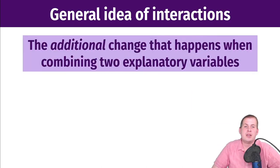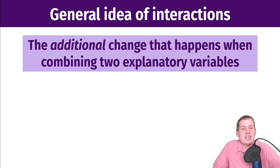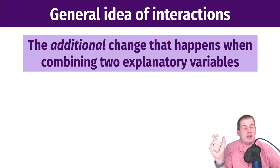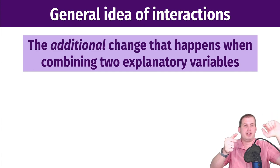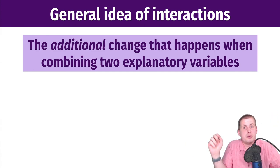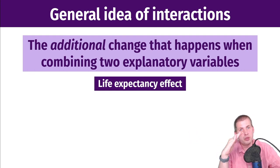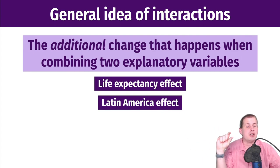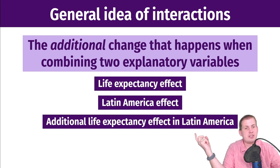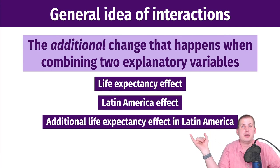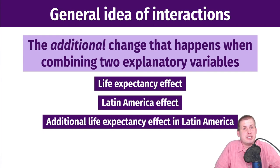The general idea of interaction terms is the additional change that happens when you combine two explanatory variables. When we interact life expectancy and region, the interaction term captures what happens with life expectancy when you're in a specific region. It's like two switches turned on, or one switch and one slider — we have the global life expectancy effect, the Latin America effect, and then the additional life expectancy effect specifically for Latin America.